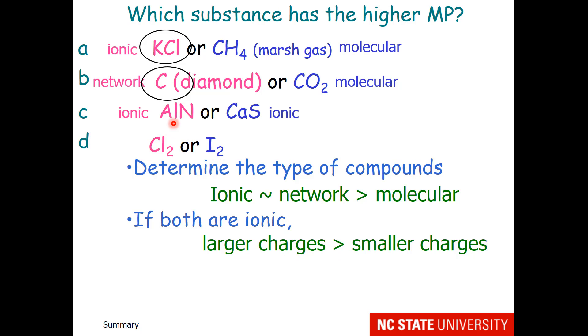So aluminum with plus 3 and nitride with minus 3 will have a higher melting point than calcium with plus 2 and sulfide with minus 2.